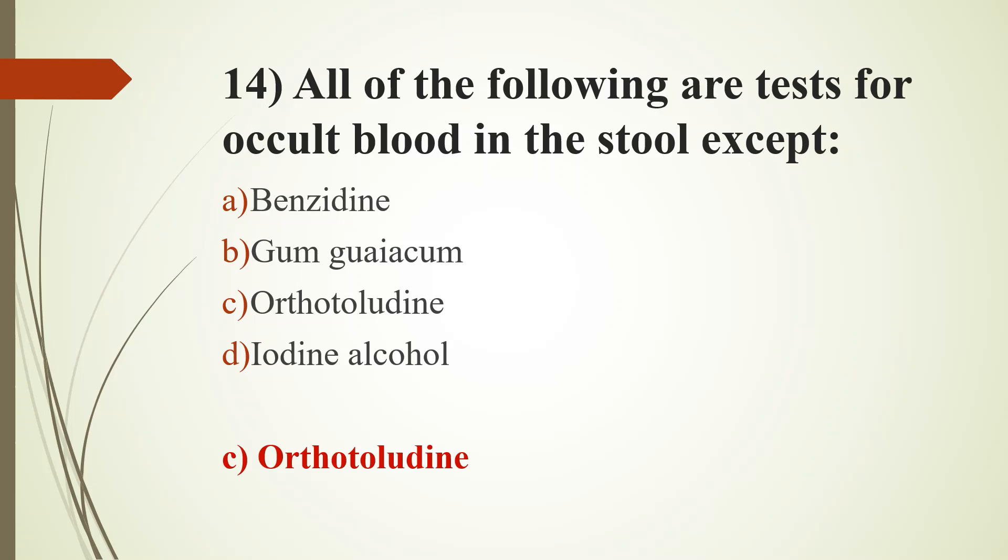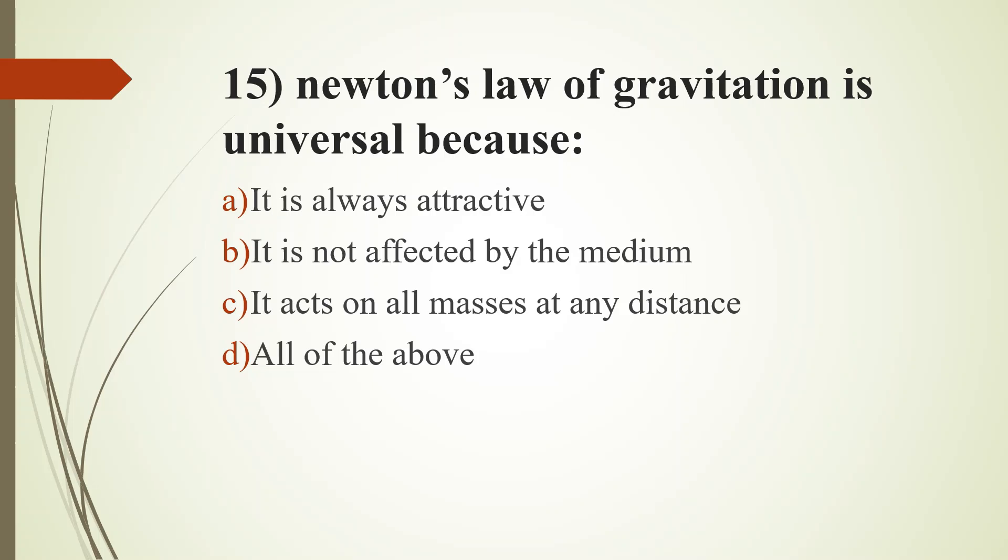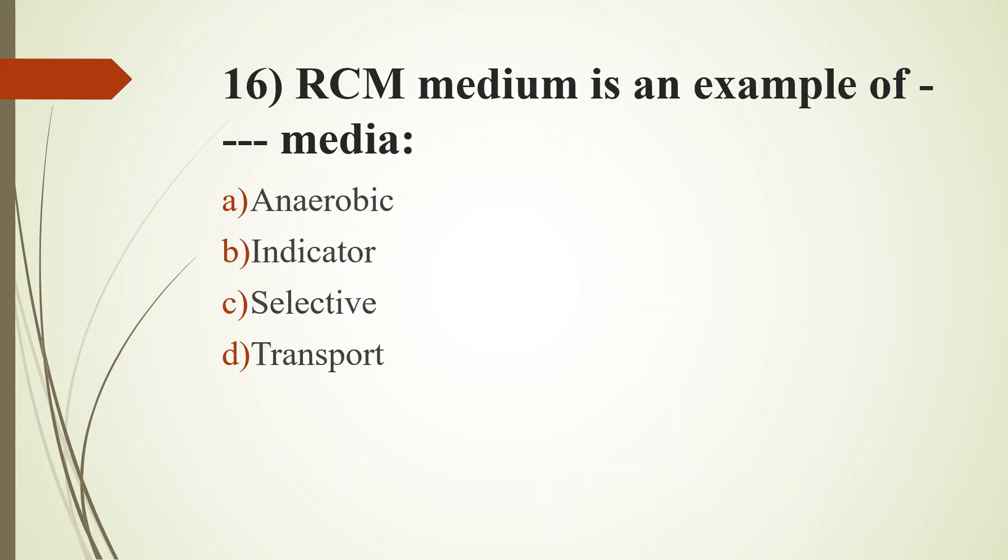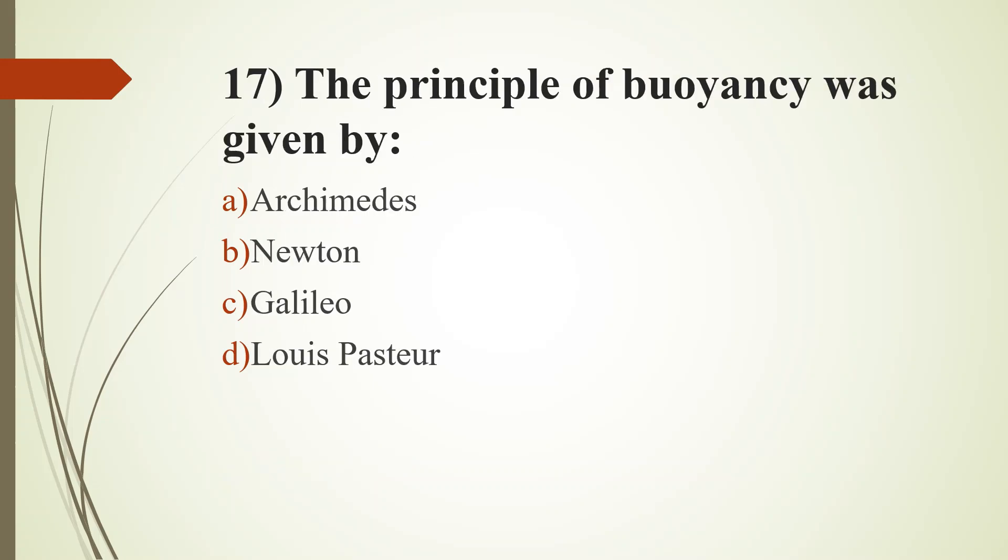15th question. Newton's law of gravitation is universal because: option A, it is always attractive; option B, it is not affected by the medium; option C, it acts on all masses at any distance; option D, all of the above. Answer is option C, it acts on all masses at any distance. 16th question. RCM medium is an example of dash media: option A, anaerobic media; option B, indicator media; option C, selective media; option D, transport media. Answer is option A, anaerobic media.